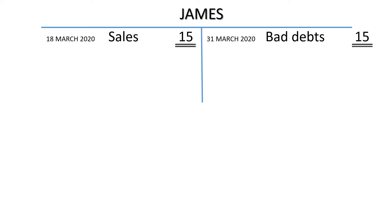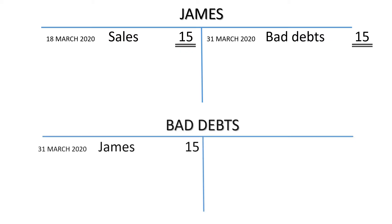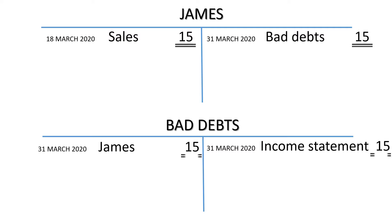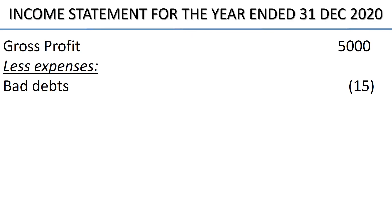The bad debts account has to be debited with the $15 that James failed to pay back, and this amount is sent to the income statement. Bad debts are an expense, therefore they are subtracted from gross profit in the income statement.